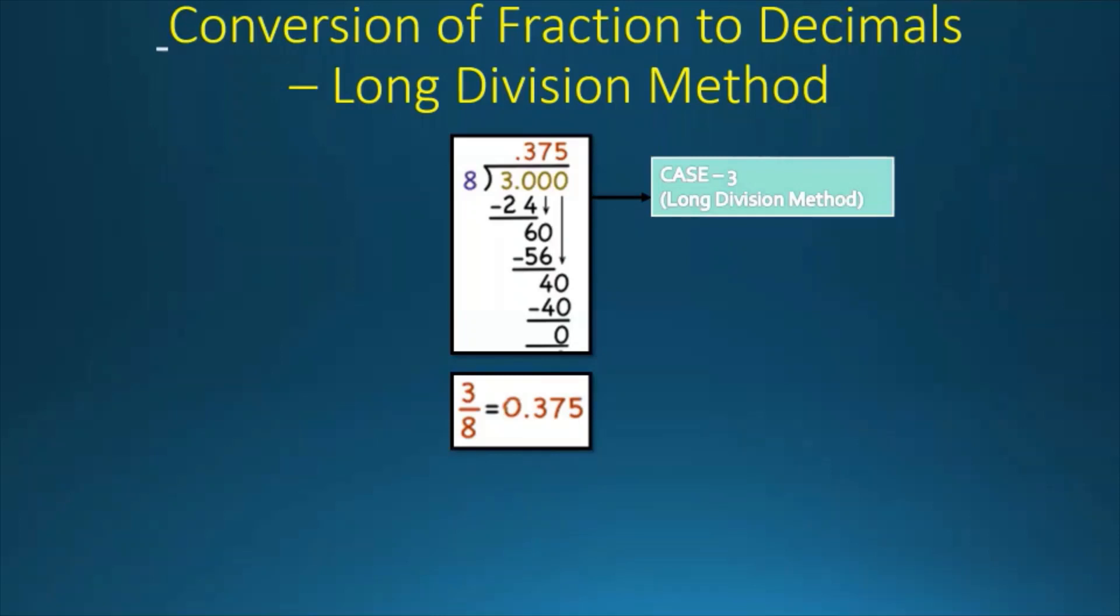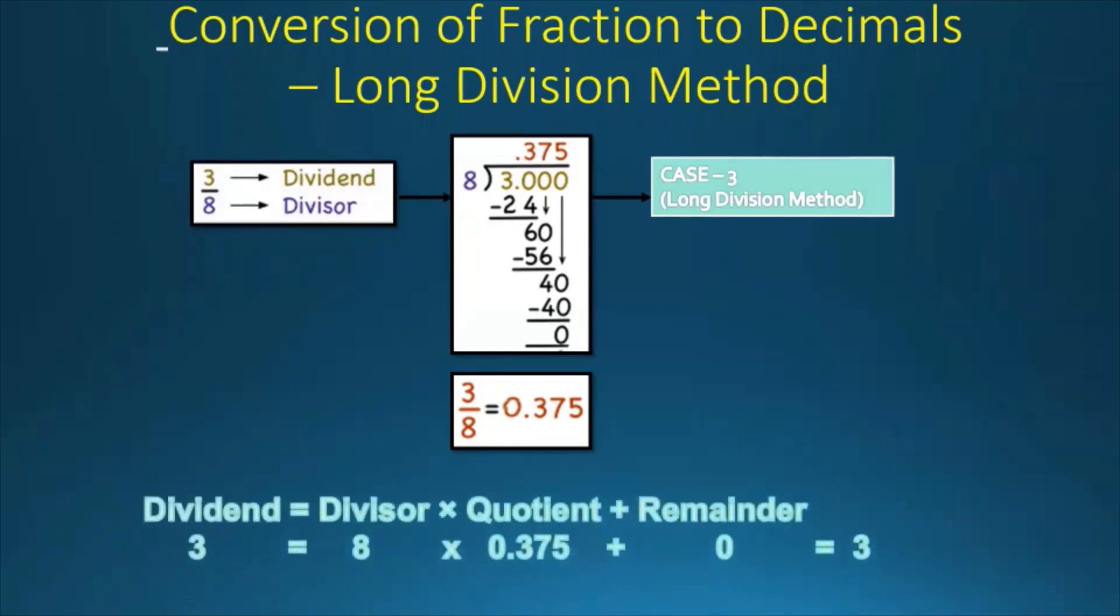Our answer was 0.375 and we got 3 by 8 as a fraction. So 3 was the dividend and 8 was the divisor. The dividend is equal to divisor times quotient plus remainder. 3 is equal to 8 times 0.375 plus 0, which equals 3.